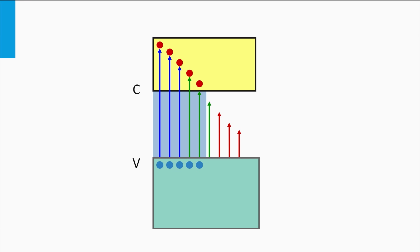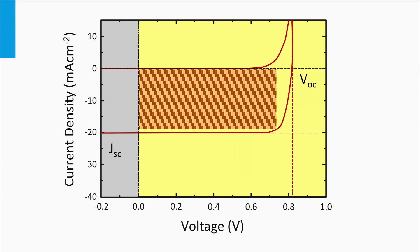Only the blue and partly the green photons are able to excite charge carriers. If we look at the JV curve, this is indicated by a relatively low short circuit current density, while due to the large bandgap a higher open circuit voltage can be obtained.